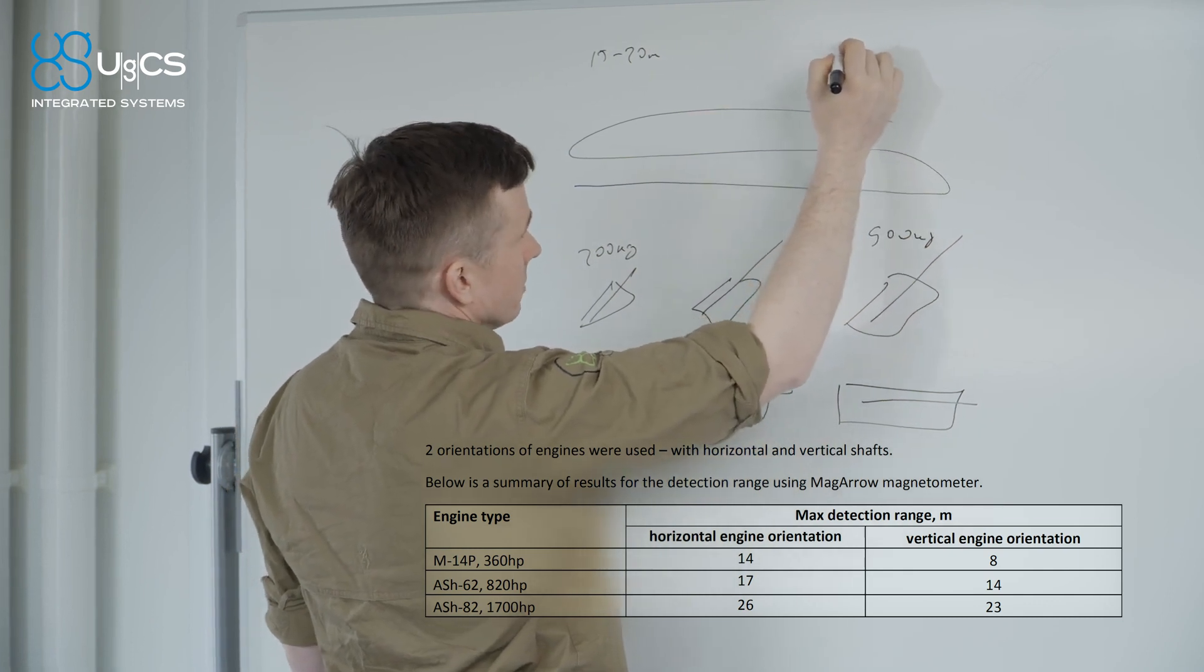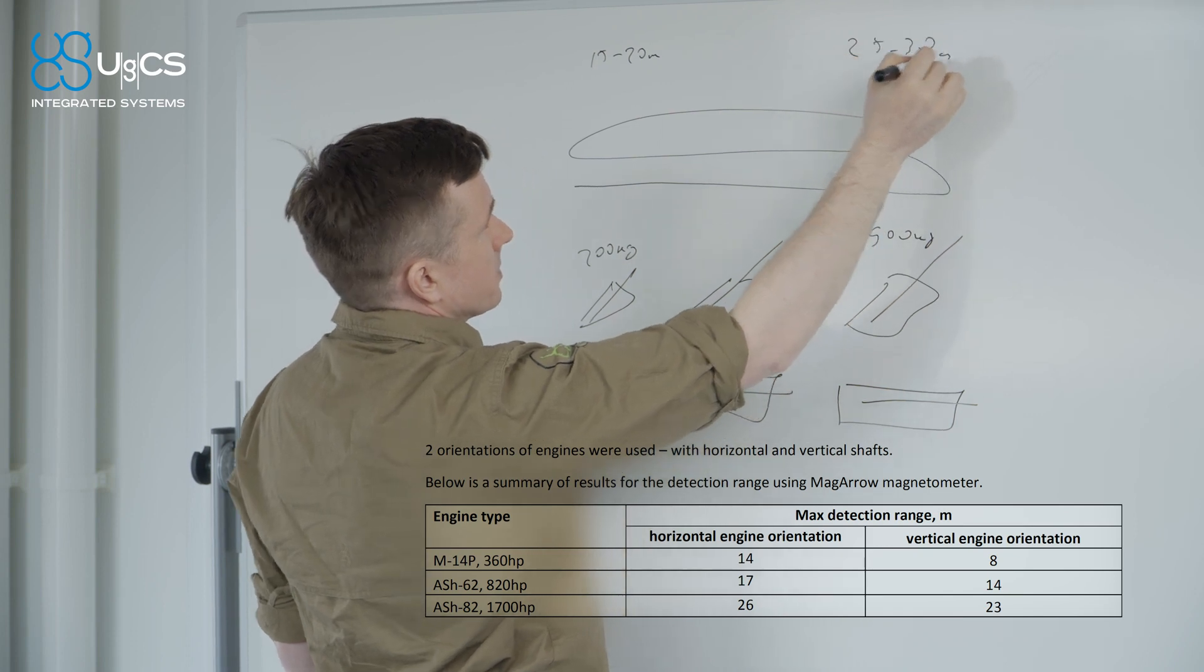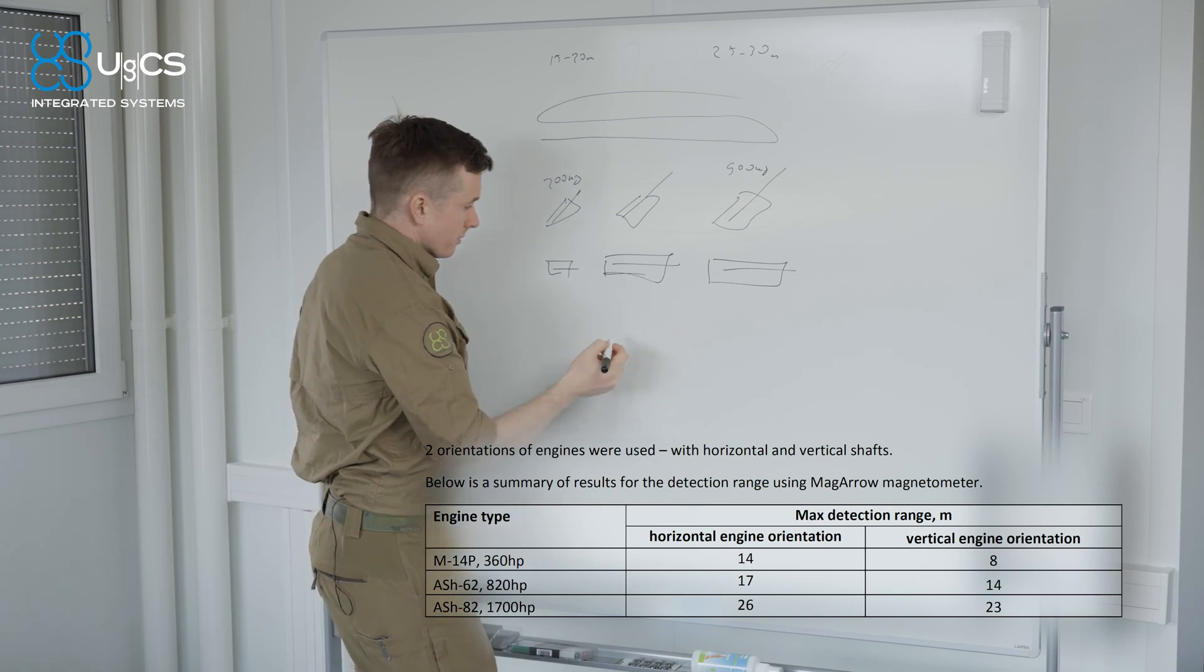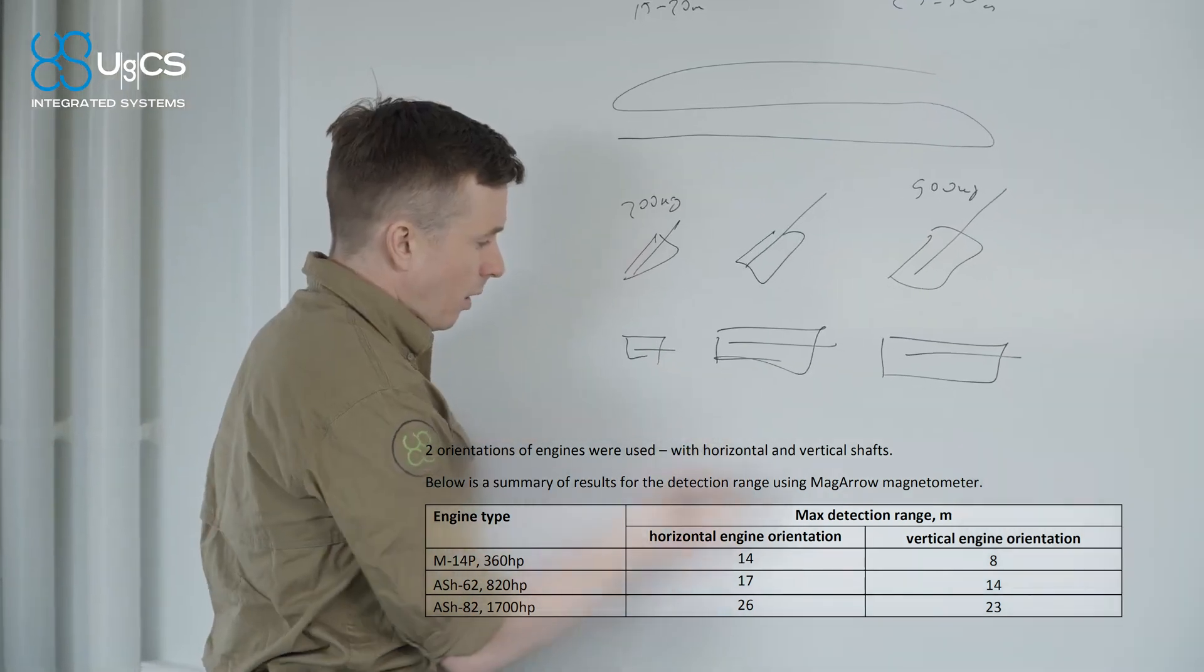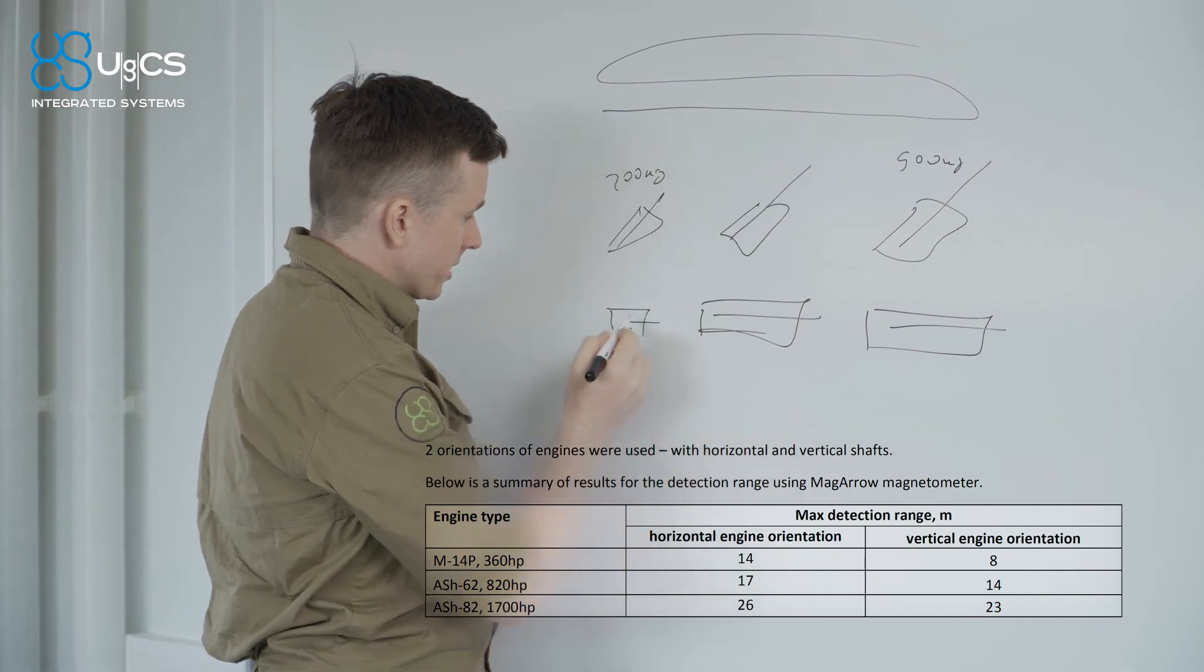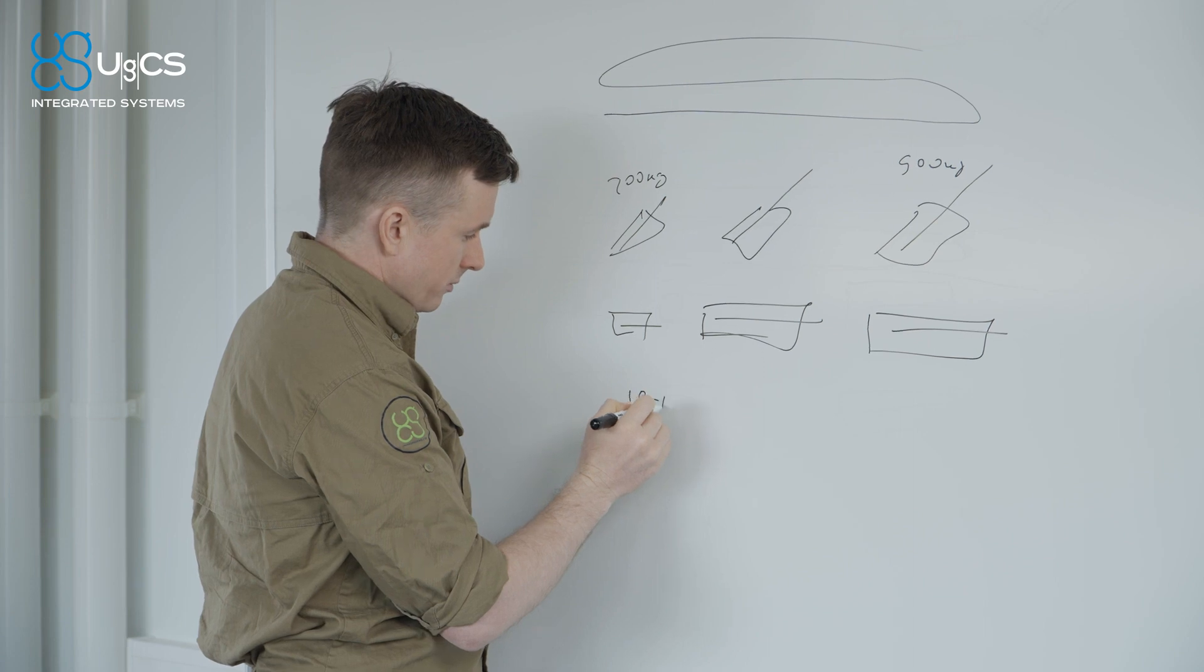The bigger engine which was around 900 kilos will disappear from readings around 25 to 30 meters of altitude. Good news is that we can still plan a survey with quite wide survey lines.